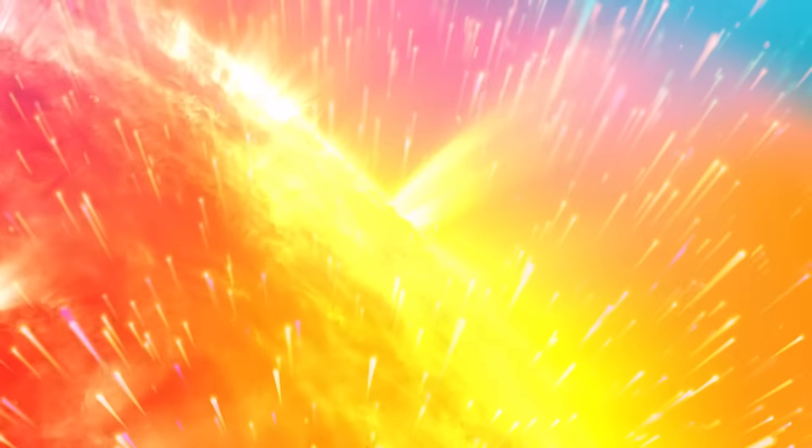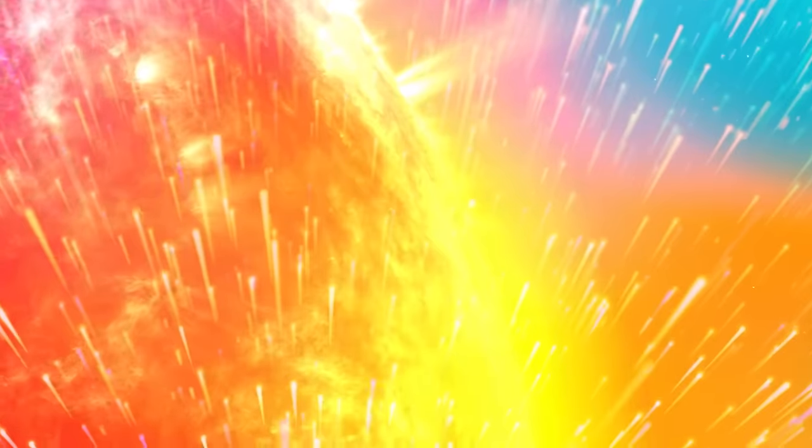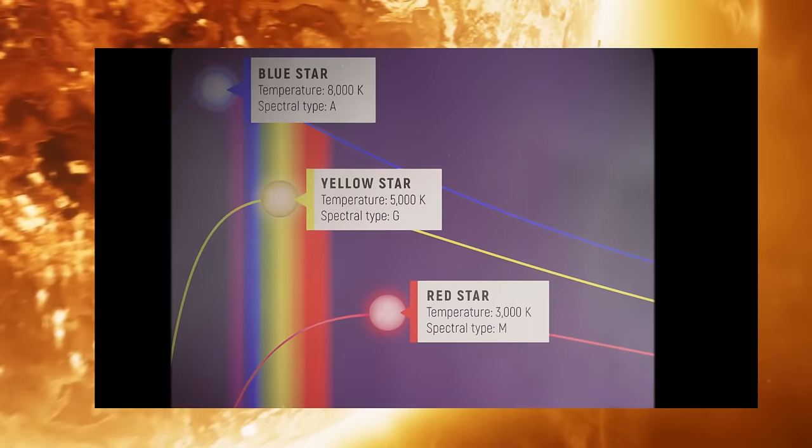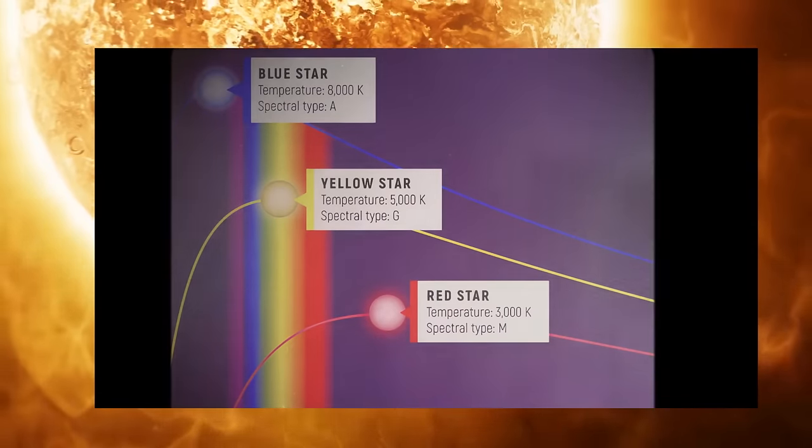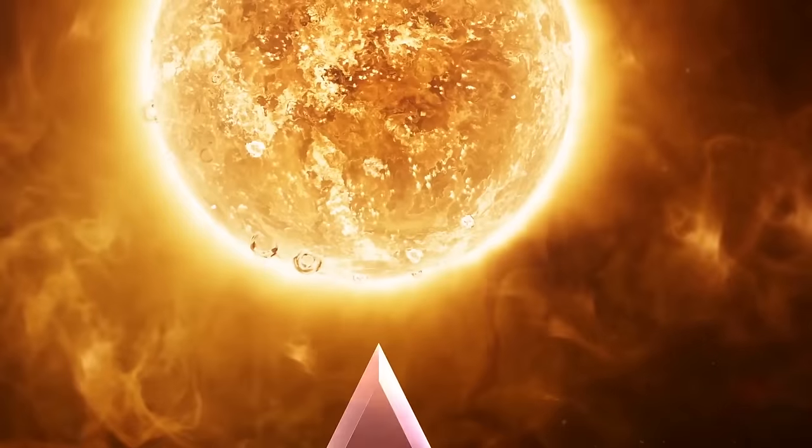Those are some of the shortest wavelengths of light. Cooler stars are normally red and red-brown, which are longer wavelengths. At the same time, stars never send out their light in just one wavelength. It's more of a range of light.